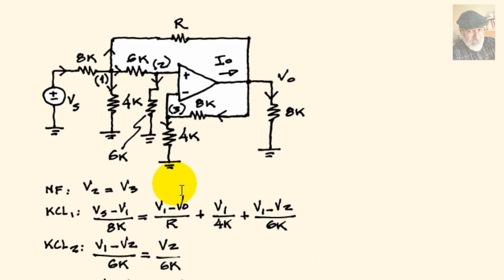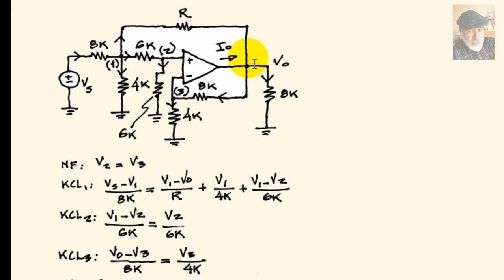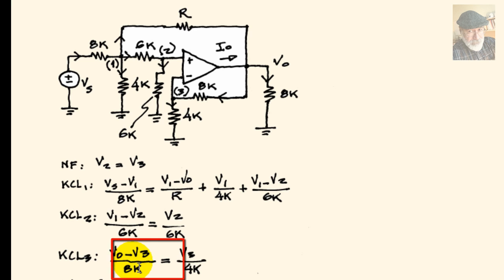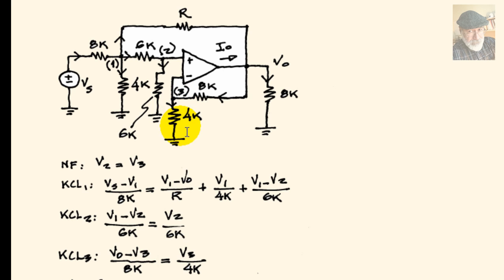KCL for node 3 has only two currents. Again, the input current to the ideal op-amp is 0. The current entering node 3 is V0 minus V3 over 8 kilohms, which equals the current leaving the node: V3 over 4 kilohms.